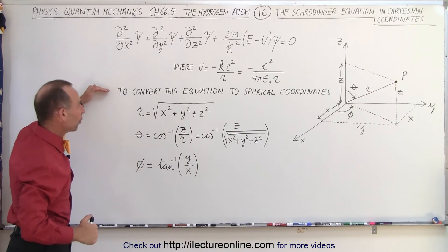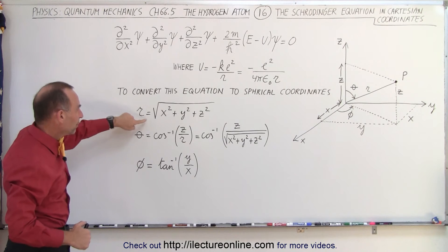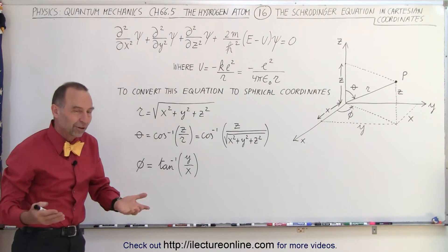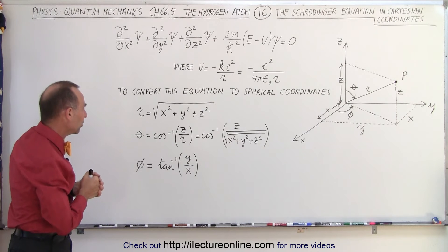Now, the conversion equations are as follows. r is going to be the square root of x squared plus y squared plus z squared, which is the Pythagorean theorem in three dimensions.